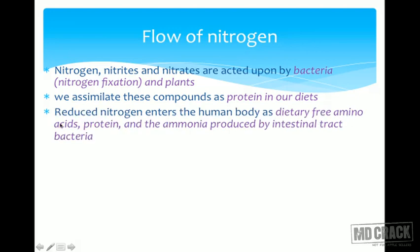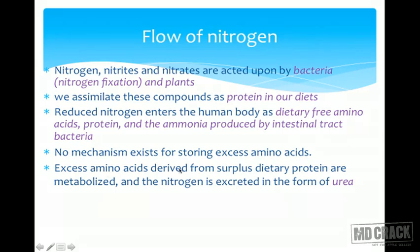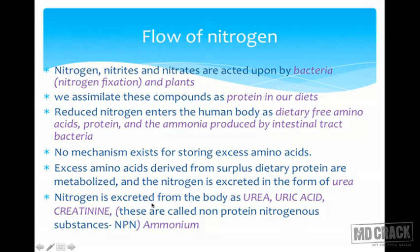Reduced nitrogen enters the human body as dietary free amino acids, proteins, and ammonia produced by intestinal tract bacteria. No mechanism exists in our body for storing excess amino acids. Excess amino acids derived from surplus dietary protein are metabolized and the nitrogen is excreted as urea, uric acid, or creatinine — these are called non-protein nitrogenous substances (NPN) plus ammonium.